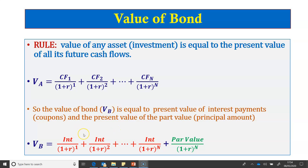For bond valuation, the cash flows are of two types: first, periodic regular interest payments, and then the final payment of the par value to the investor. If we know the timings of these interest and par value payments and the required rate of return — the discount rate — we simply discount these payments back to the present value and sum them to get the value of the bond.